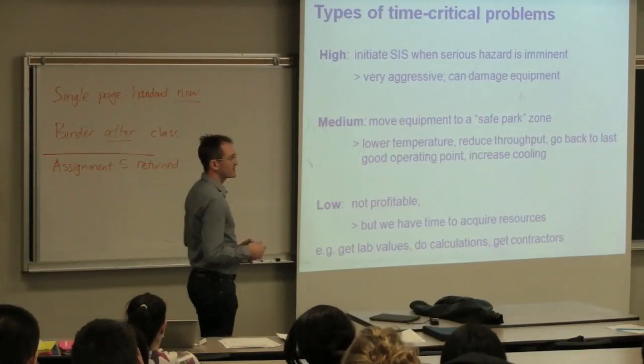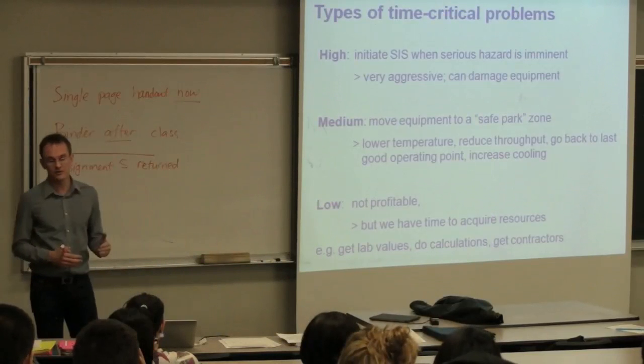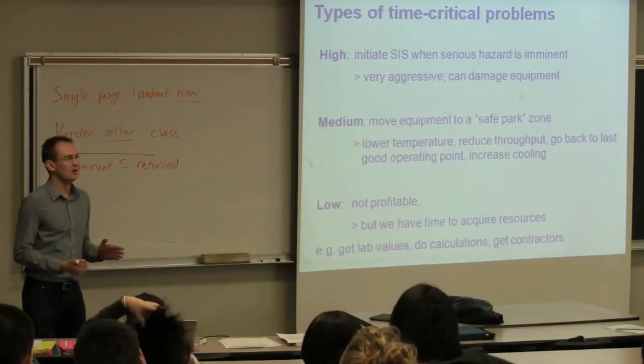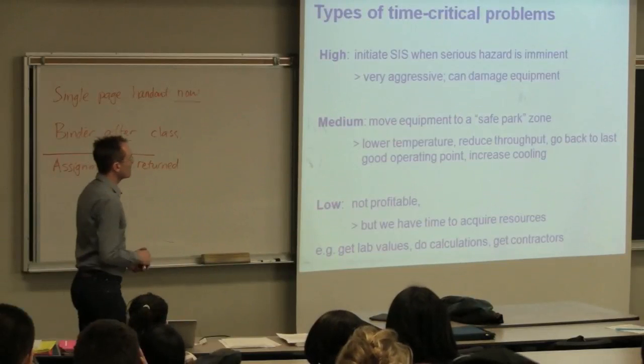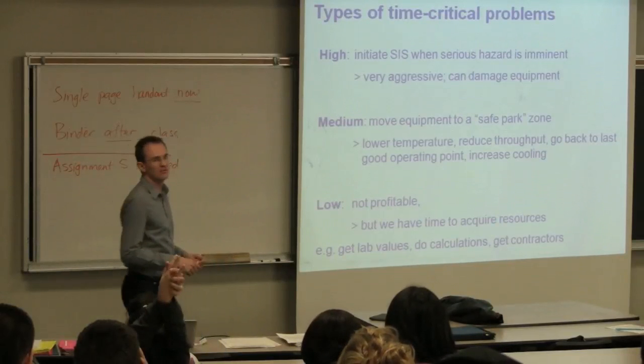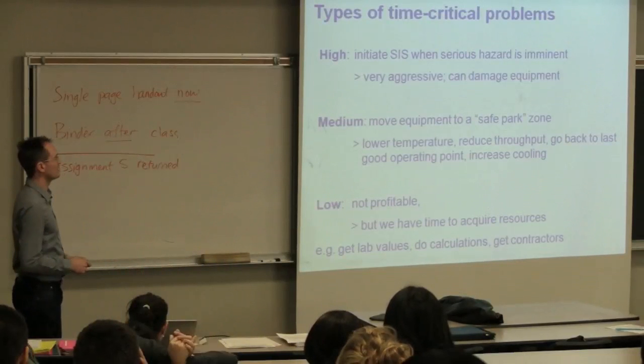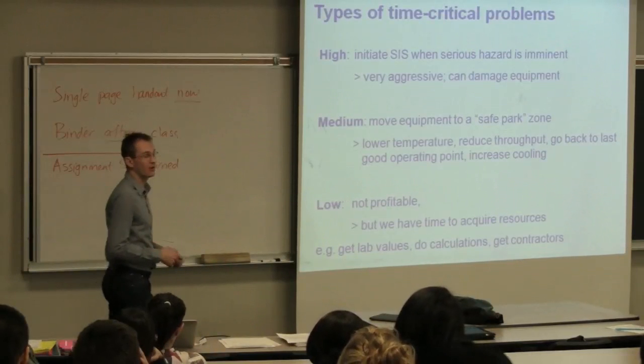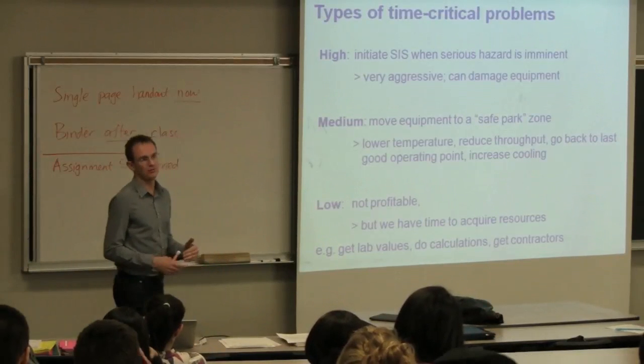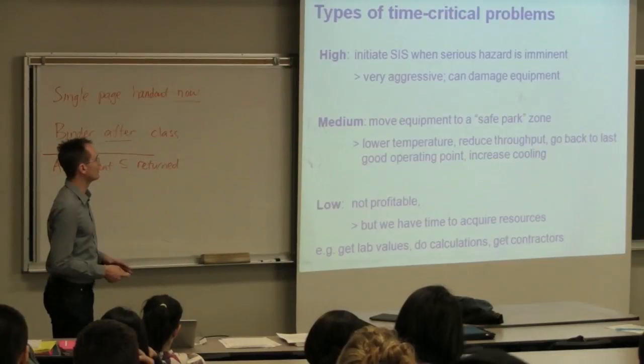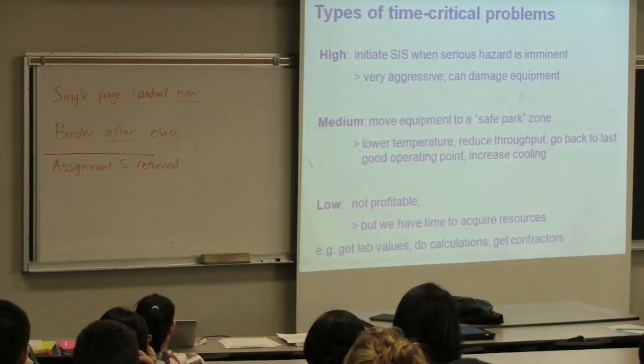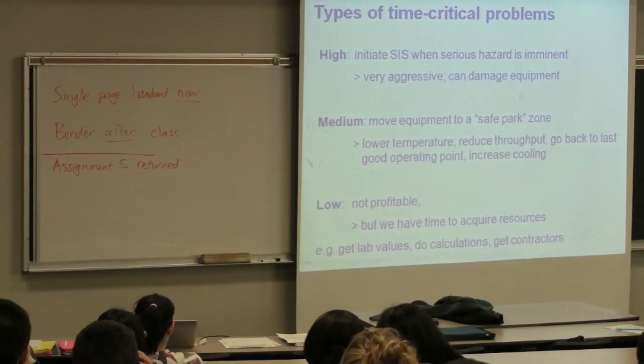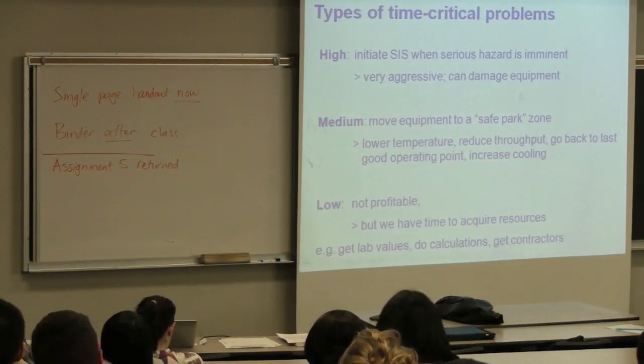We also have to recognize that there's some time-critical behavior or some time-critical problems. We tend to rank them into three levels: high, medium, and low. High critical problems—these are when you've got seconds or minutes left to solve the issue before it gets serious. If the safety interlock system has not already been initiated, this is the type of problem where you do initiate it. Initiating SIS tends to be incredibly aggressive on any process and can actually damage the equipment. However, if it's called for, that's what is needed.